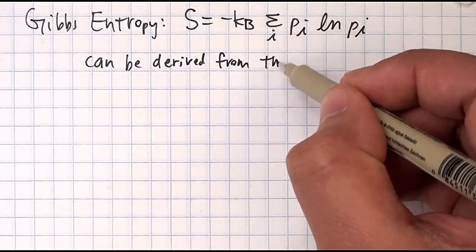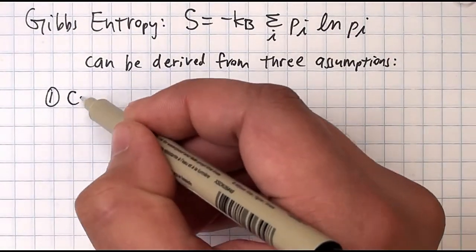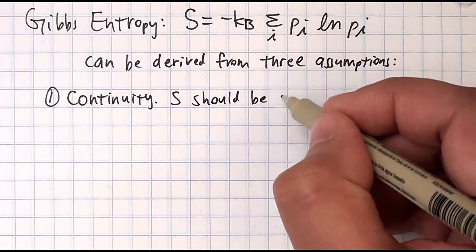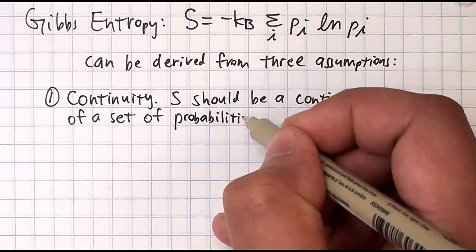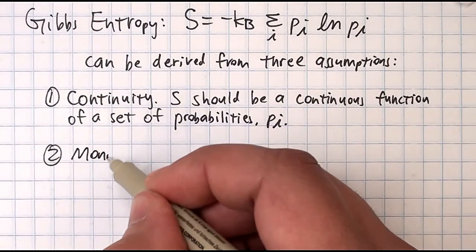Shannon used three assumptions to derive a form of uncertainty that turned out to be just the Gibbs entropy. Number one, continuity. Uncertainty should be a continuous function of the probability distribution.